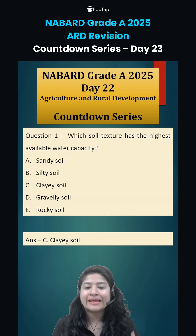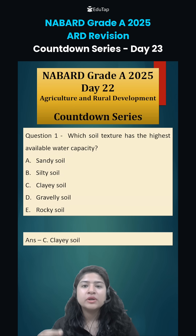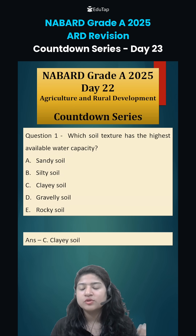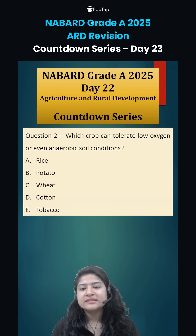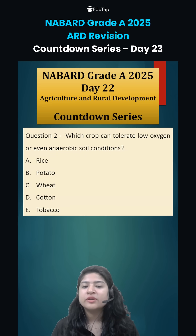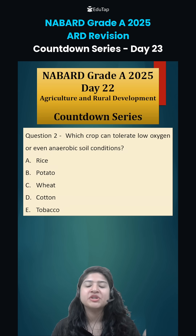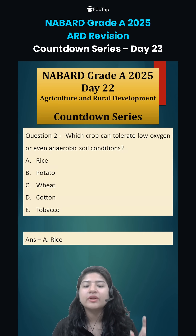clayey has finer soil particles and therefore they are able to hold more water. Next is: which crop can tolerate low oxygen or even anaerobic soil condition? Anaerobic means there is no oxygen present, and that is rice.